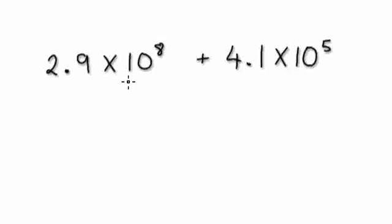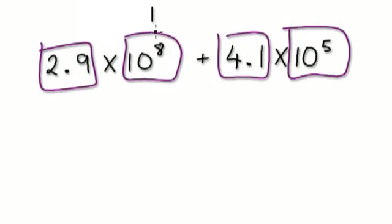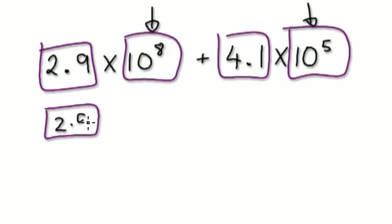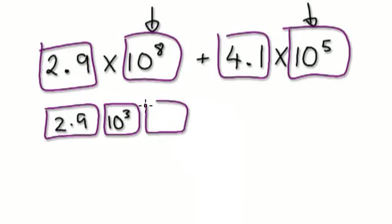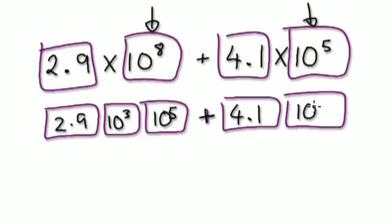Let me give you another example here. So here you've got this times this plus this times this. So break this up so that these two are the same — it's only when you add or take away. So think of this as 2.9 times 10 to the power of 3 times 10 to the power of 5, plus 4.1 times 10 to the power of 5. By breaking this up, these two would be the same, so we can factorize.